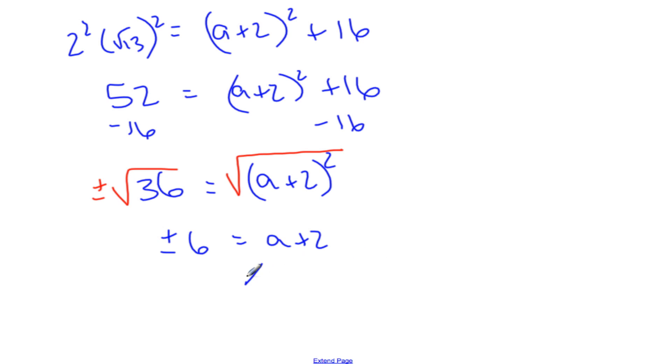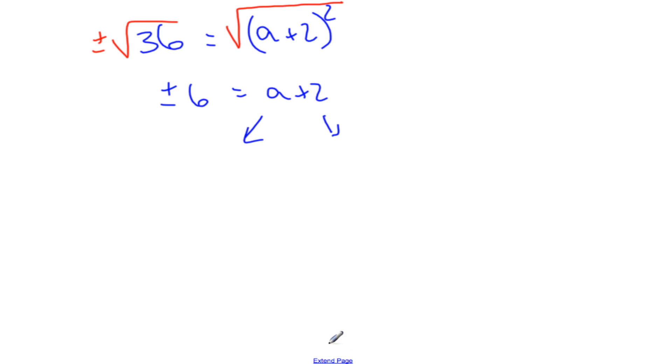And so now this breaks up into two different scenarios. I can say A plus 2 equals positive 6 or A plus 2 equals negative 6. Because it's two different answers. Subtract the 2 and I get 4. Subtract the 2 and I get negative 8. And so my A could be negative 8 or it could be 4.